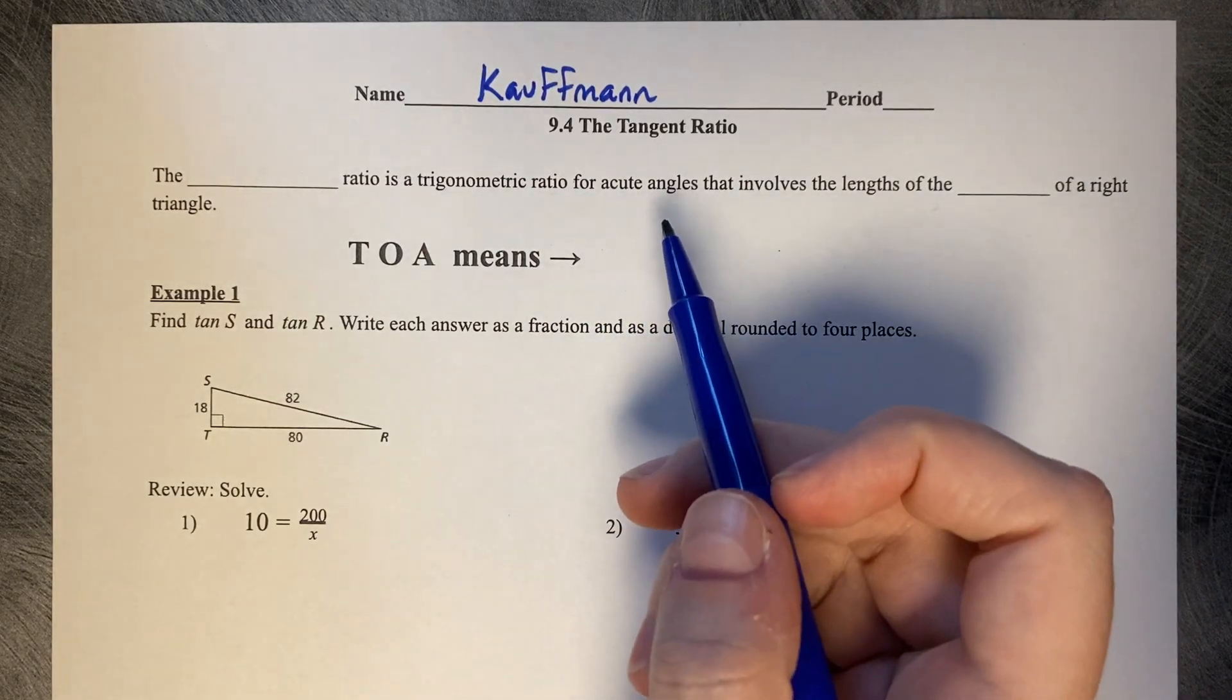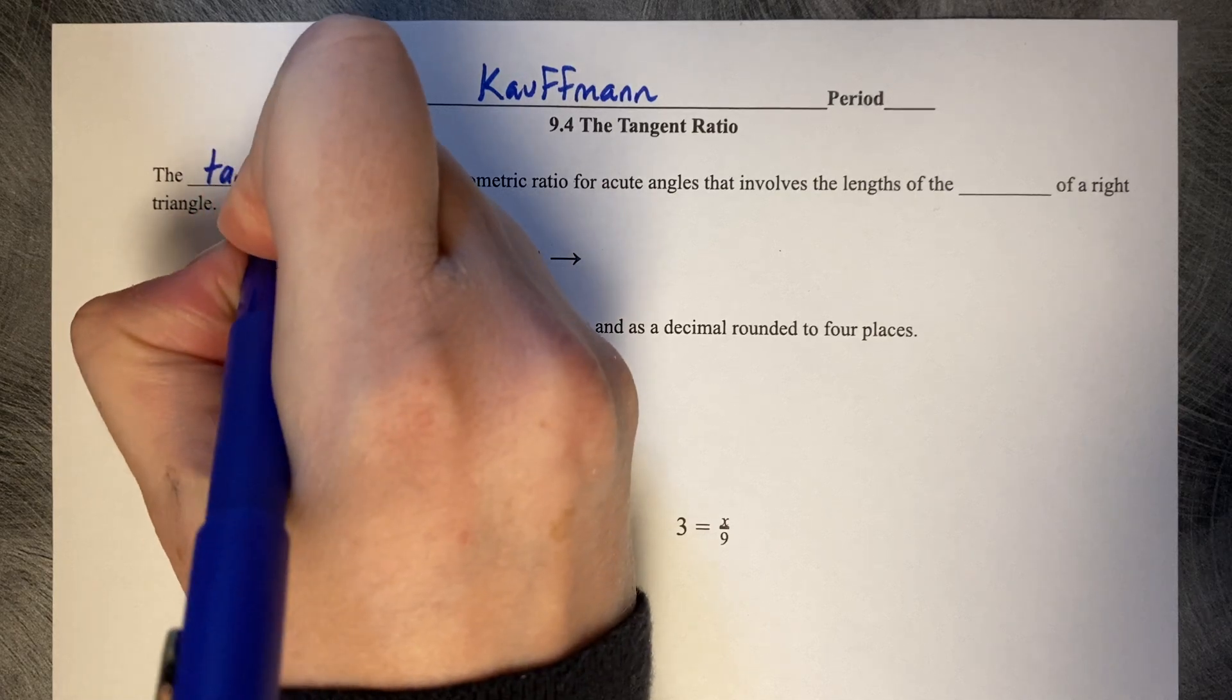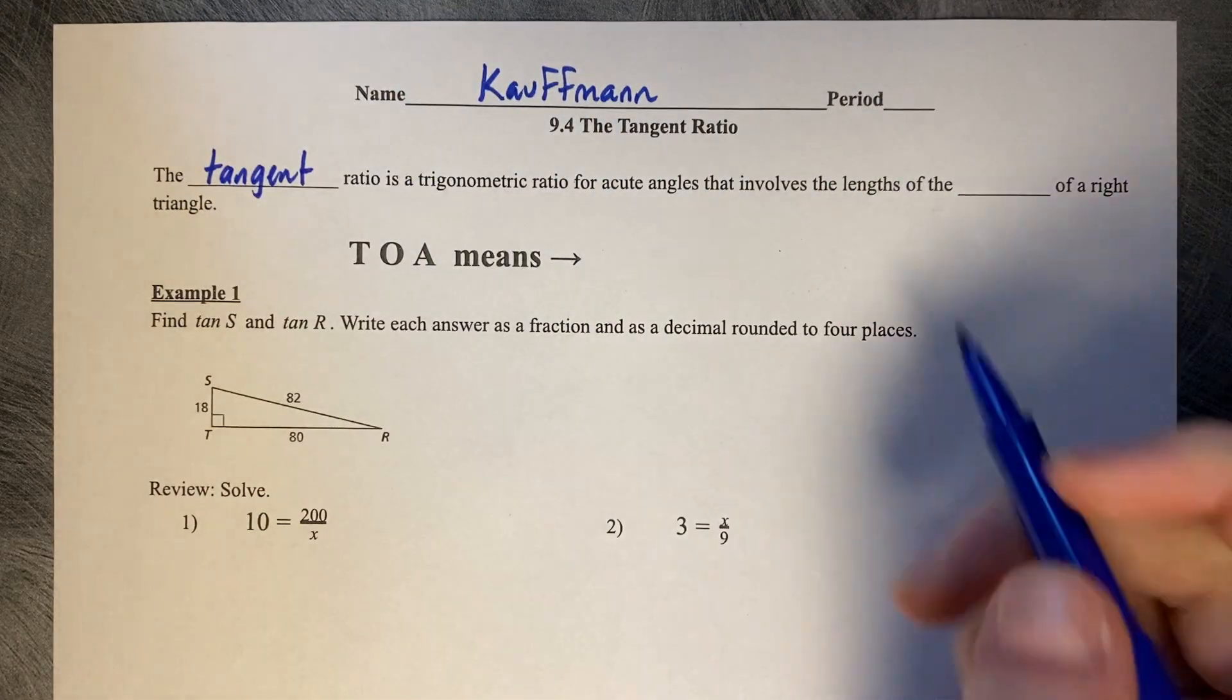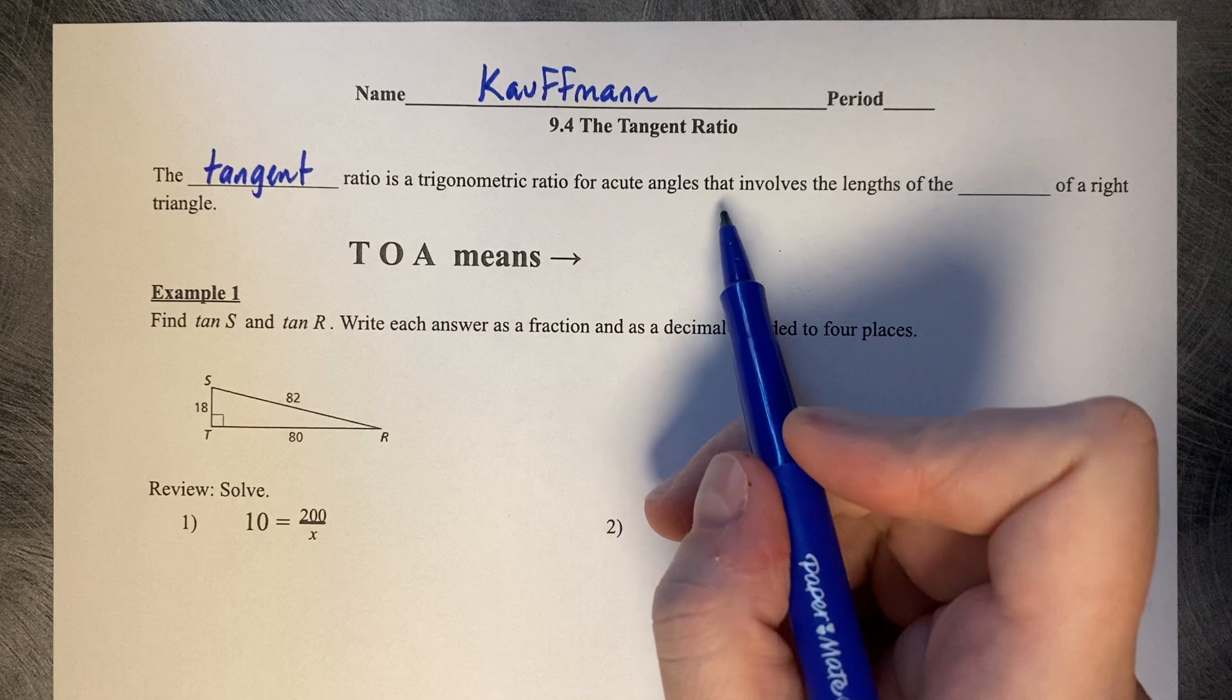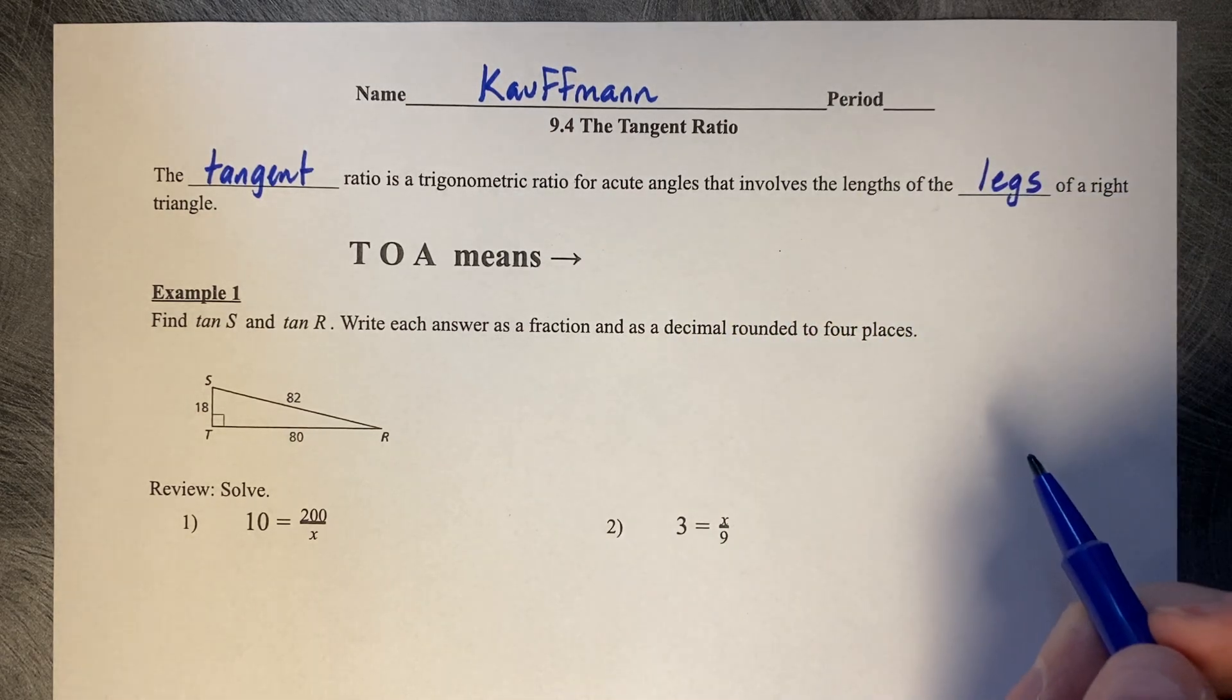Section 9.4, the tangent ratio. The tangent ratio is a trigonometric ratio for acute angles that involves the lengths of the legs of a right triangle.